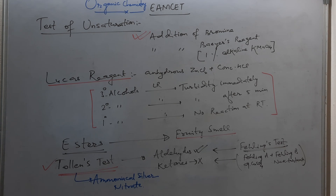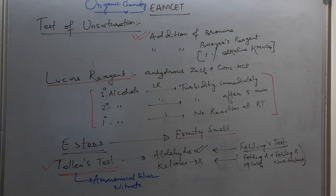Next is a very important topic for your exam: Tollens test and Fehling test. Tollens reagent is ammoniacal silver nitrate. It is used to distinguish between aldehydes and ketones. Aldehydes give a silver mirror with Tollens test, but ketones fail to give this reaction.